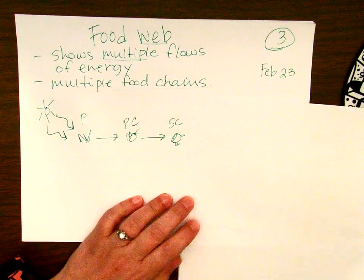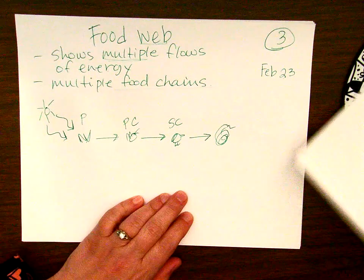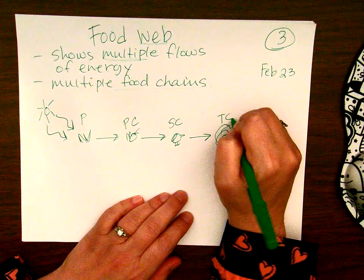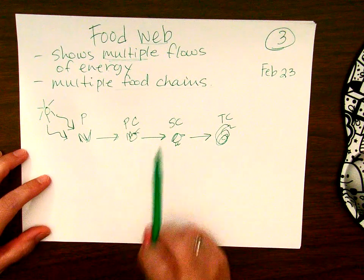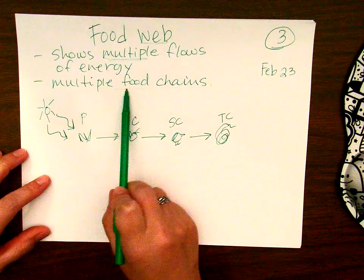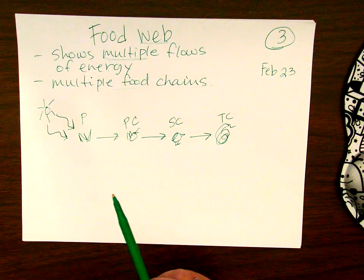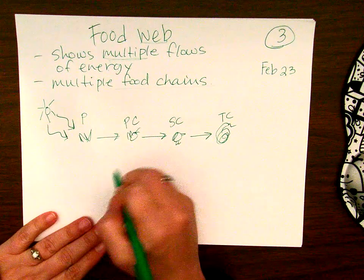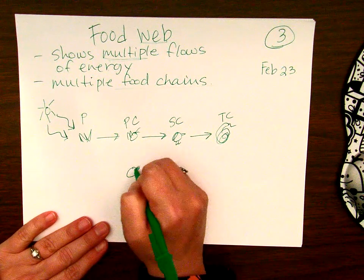Then we have the snake that eats the bird, and that is a tertiary consumer. Now this is just a simple food chain — this is one chain. But a food web is multiple food chains, so this alone is not a food web. Let's make a food web by adding more critters to this ecosystem.